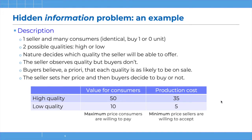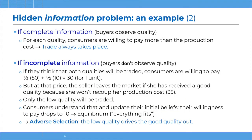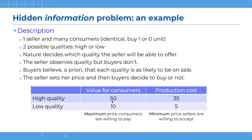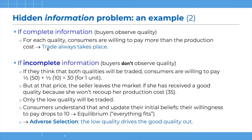Now we'll try to understand what happens first in the benchmark case when there is perfect information, and then we'll see what happens when there is incomplete information. In the benchmark case, buyers do observe quality. The maximum price consumers are willing to pay is always larger than the minimum price sellers are willing to accept for both qualities. So there will be room for negotiation and consumers will buy, which is efficient. Trade always takes place if there is complete information and this is efficient.